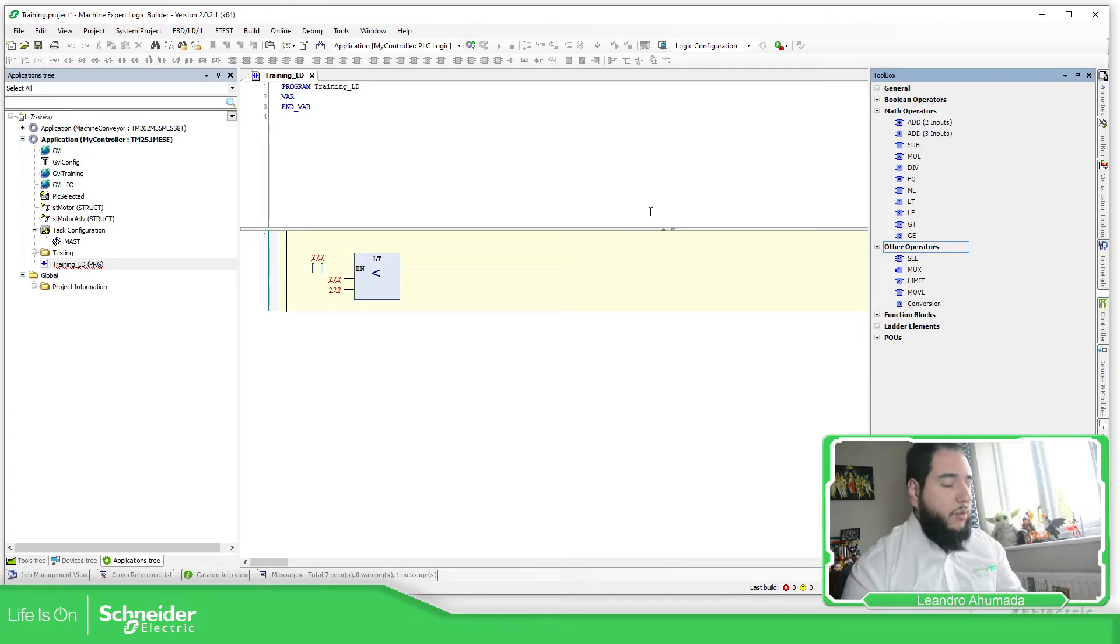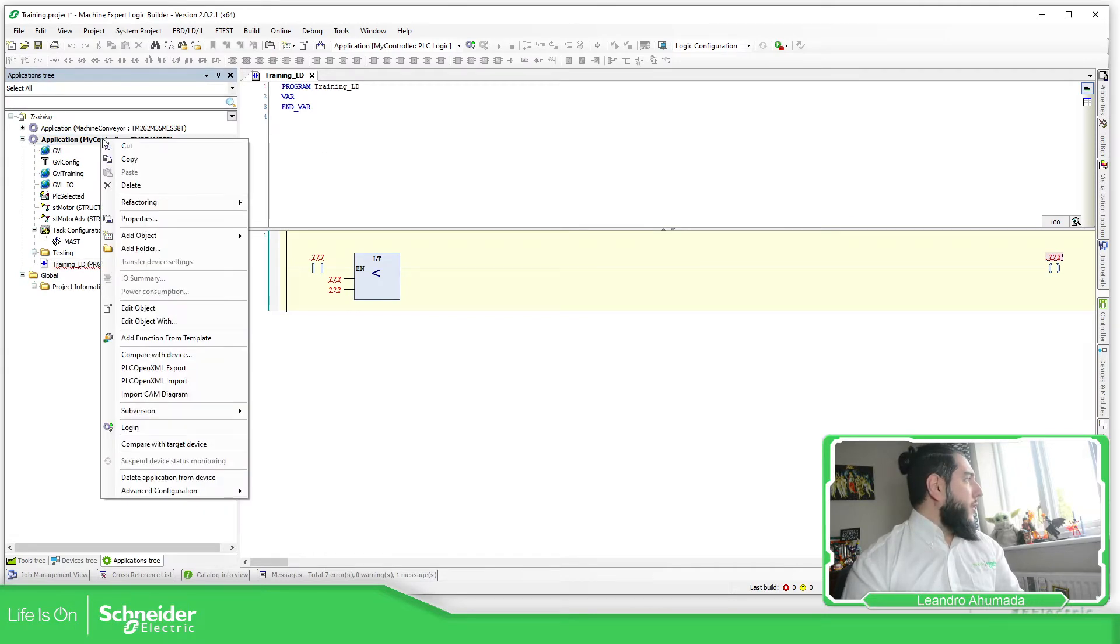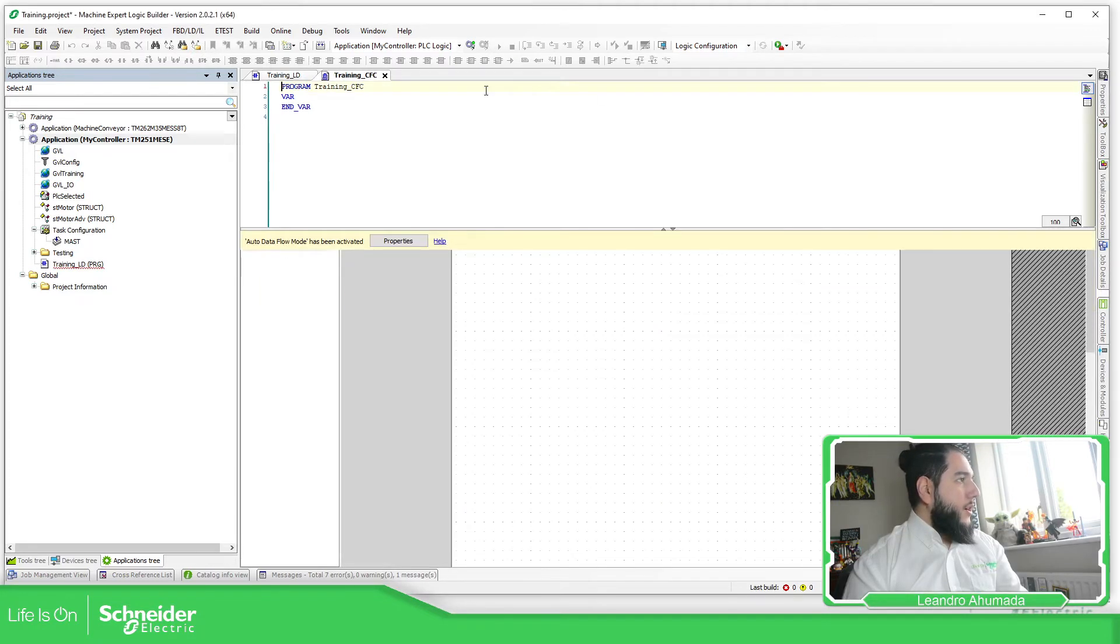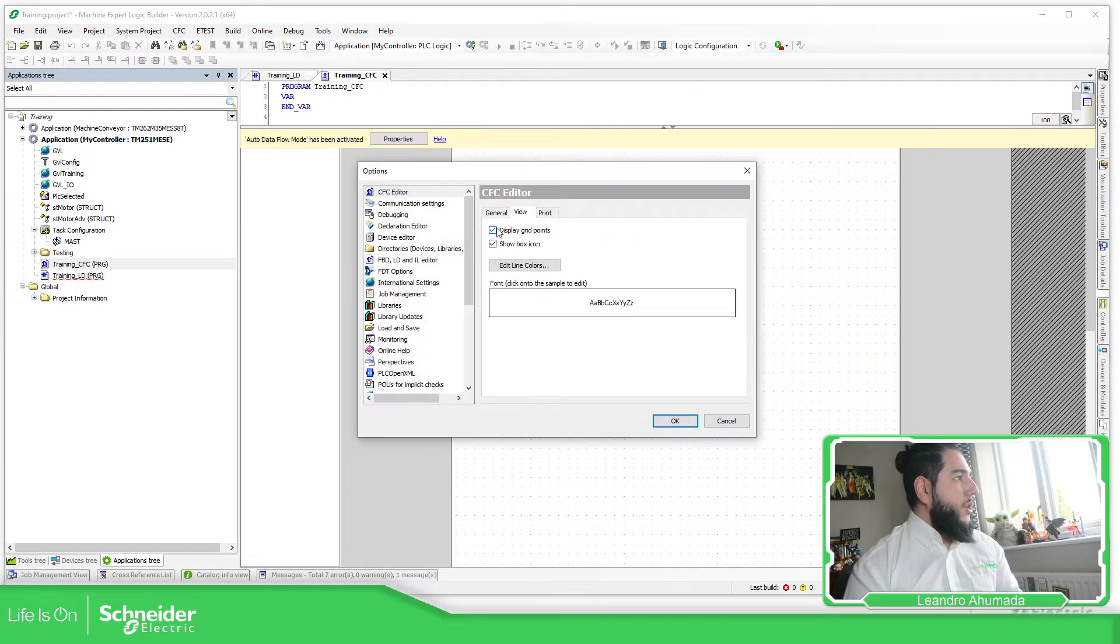How you can make comparison with the blocks. So let's go to the CFC, which is different from the ladder. It looks like to the function block diagram. So if we now create another POU, training CFC and select the CFC or page oriented. If you have this different, it means that you have already, this is not the default view of the CFC. You can configure that on the options and CFC editor, view display and everything.